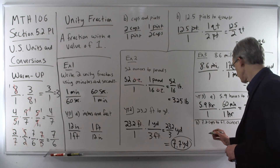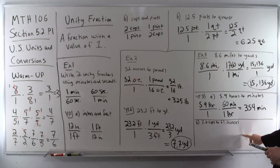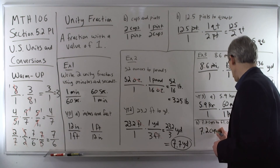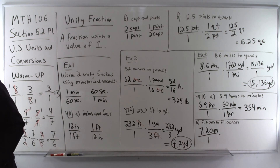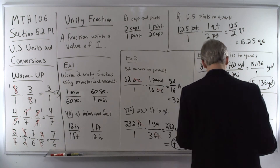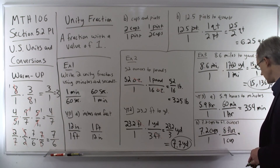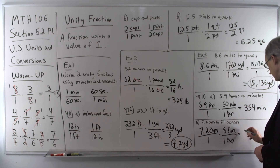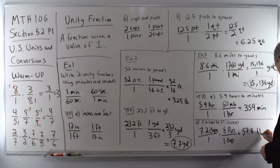Part B: 7.2 cups to fluid ounces. Note these are fluid ounces — a quantity of volume — different from the ounces used for pounds. So 7.2 cups over 1. The conversion factor between fluid ounces and cups is 8 fluid ounces in 1 cup. Position so cups are on the bottom to cancel, leaving just fluid ounces. Multiply 7.2 times 8 to get 57.6 fluid ounces.